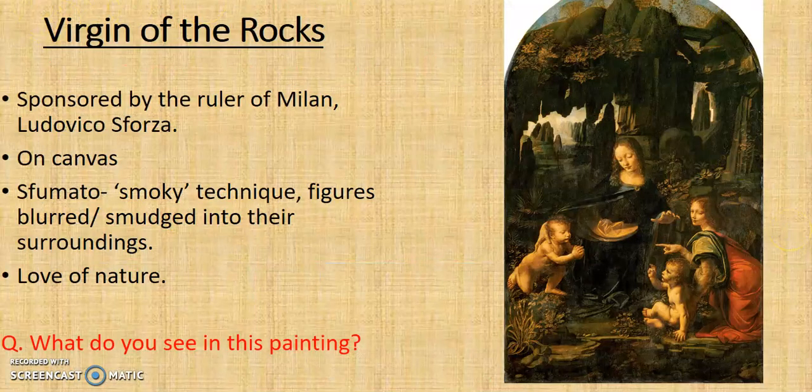Now let's look at the Virgin of the Rocks. This painting shows the Virgin Mary with the baby Jesus, John the Baptist, and an angel. The angel is meant to show da Vinci's ideal of what a woman would look like, and at the time there was much debate about whether she was beautiful. Da Vinci's patron here was the ruler of Milan, the Sforza family, mentioned in our introduction video. It was done on canvas — again a new development — and it had that smoky sfumato technique: the figures are blurred, the edges are smudged, everything looks natural and blended in, with an emphasis on nature in the background.